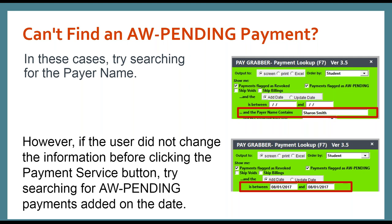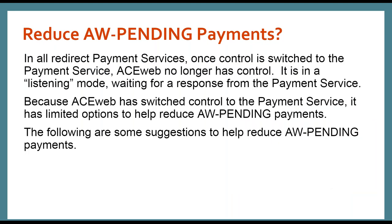So what are some ways that we can reduce some of these AWPending payments? We've already stated that once control is handed over to the payment service, ACEweb is in that listening mode — it's waiting for a response. The options that we have are pretty limited, and that's just the nature of how this works because we need a record for that payment to sit on. That payment is the placeholder for the authorization info. If we never hear back, you're going to be stuck with these AWPendings.